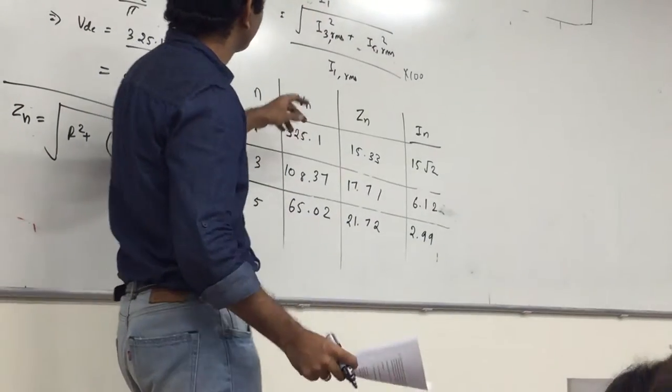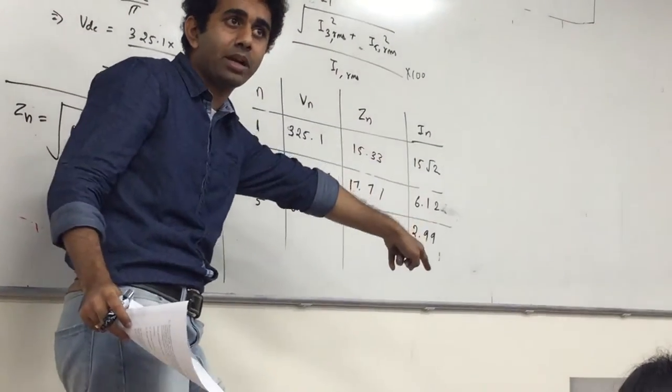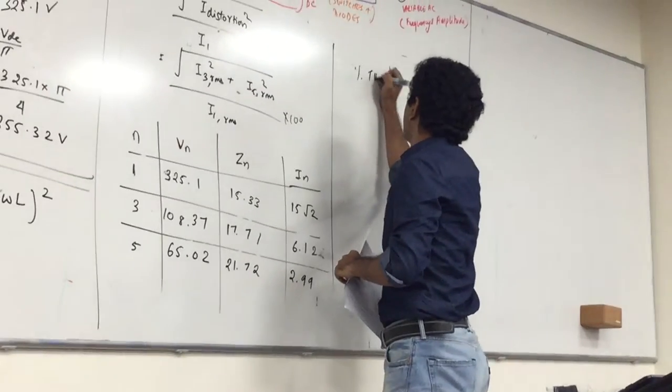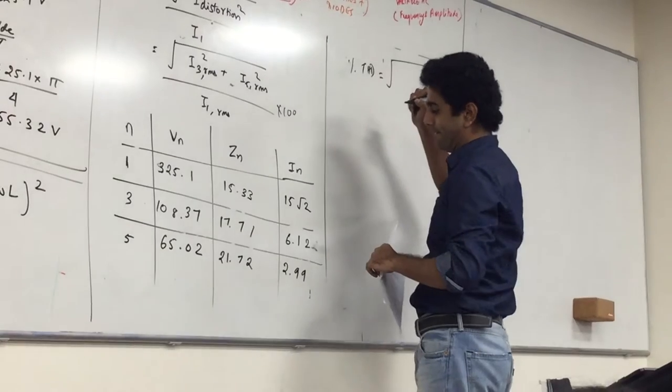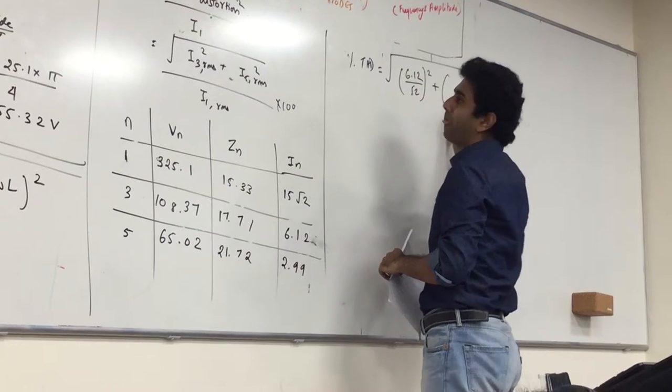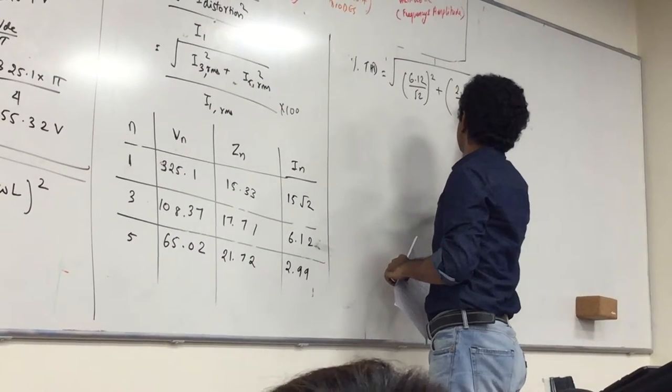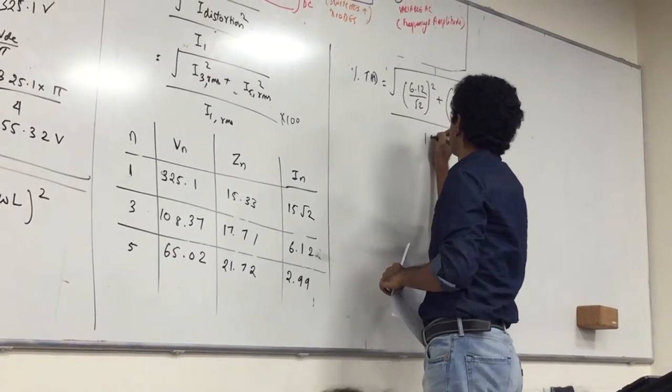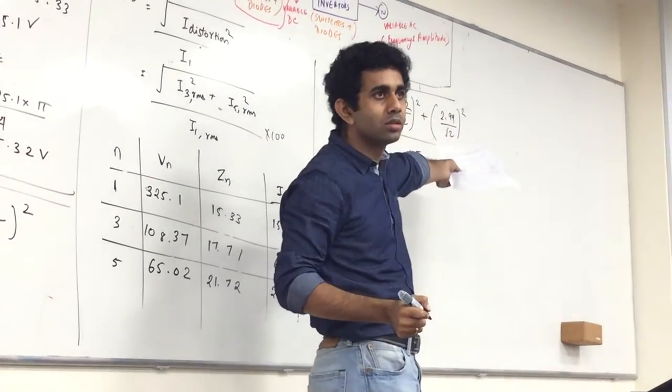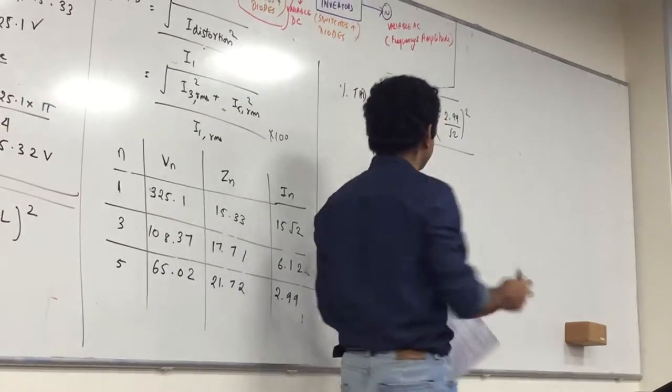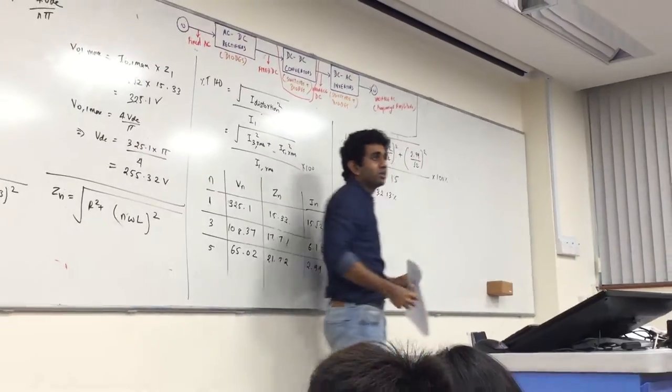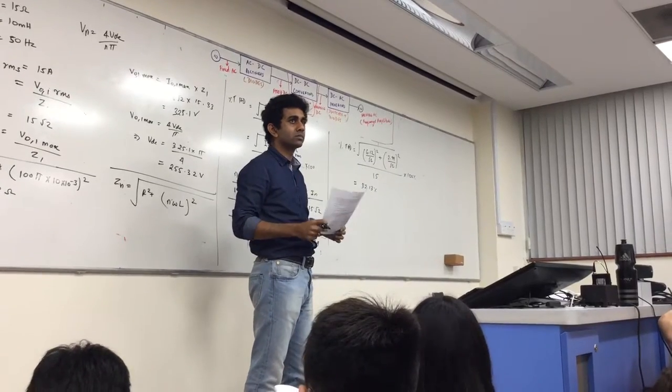I have I3 max, I5 max. I don't have the IRMS value yet, so I can just find out the THD. I can do 15 root 2 by root 2, but why? What do you get here? 32.13%.